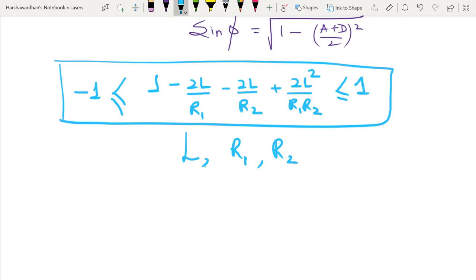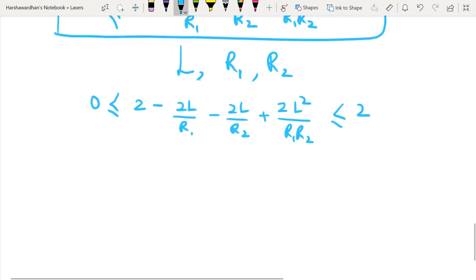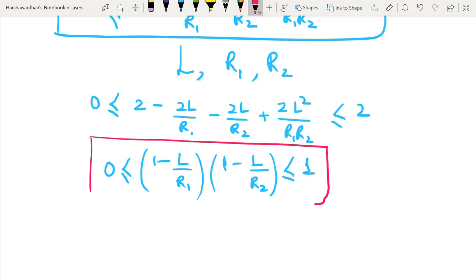Let me just rewrite this in a slightly different manner. Let me add 1 to all of these terms. So what I get is 0, 2 minus 2L by R1 minus 2L by R2 plus 2L square R1 R2 and this is less than or equal to 2. So you will see that I can divide this whole equation by 2. And what I get is essentially, this becomes my criteria for stability which is 1 minus L by R1 into 1 minus L by R2.